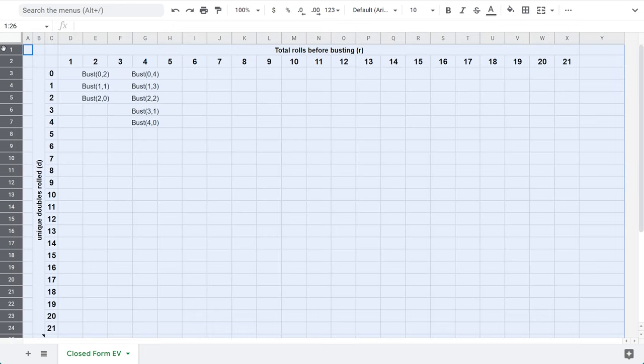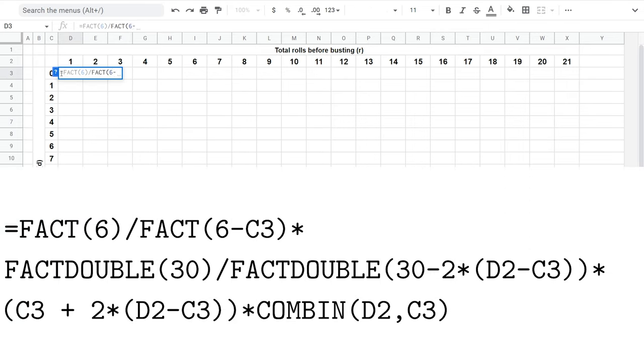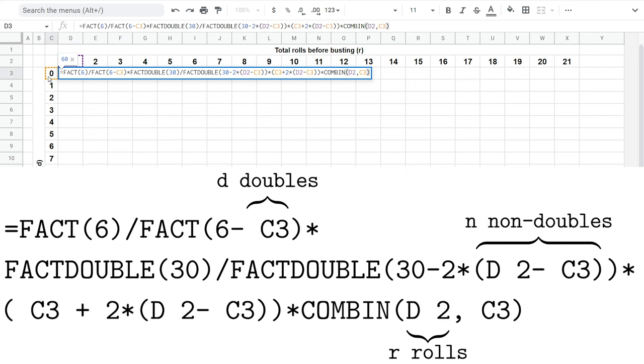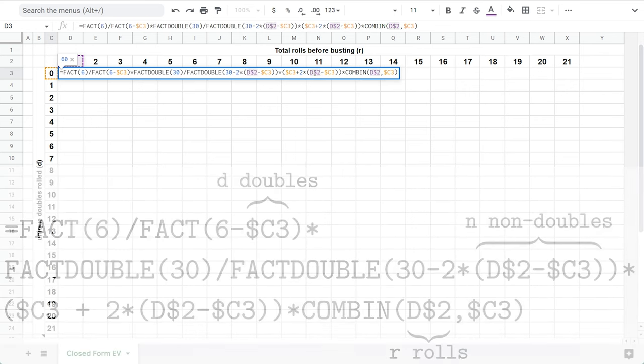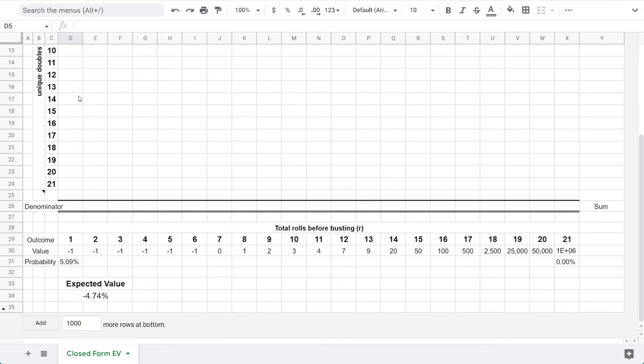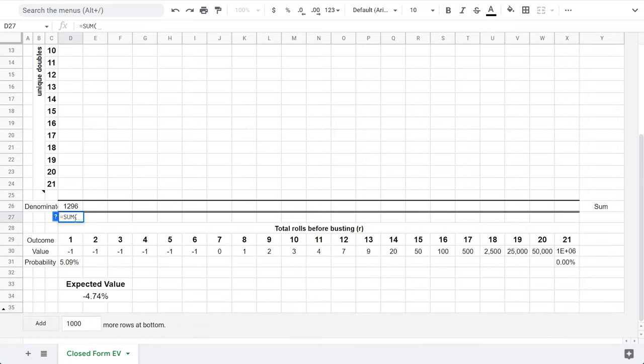Back in our spreadsheet, I left some space for calculating the lose function. Specifically, each of these cells will be a bust calculation, and we will add them up. Each column corresponds to a total number of rolls before losing, and each row corresponds to a number of doubles rolled along the way. Sheets has a function for factorial and double factorials, as well as one for r choose d, called COMBIN, short for combination. I'm making use of partial absolute references with these dollar signs, because hopefully I can write the formula once, and drag it right and down to fill it out to all the bust cells. We need to sum bust cells from 0 to r, that is 0 to 1, so we have two total cells for our first outcome. The denominator goes down here, which is 36 to the r plus 1 power, and then we sum up all the bust cells from above and divide by that denominator.